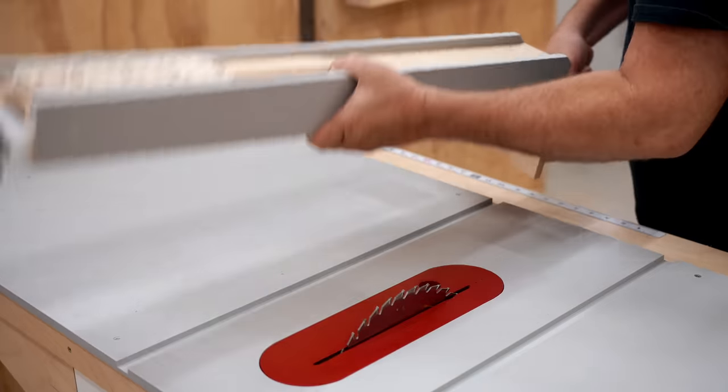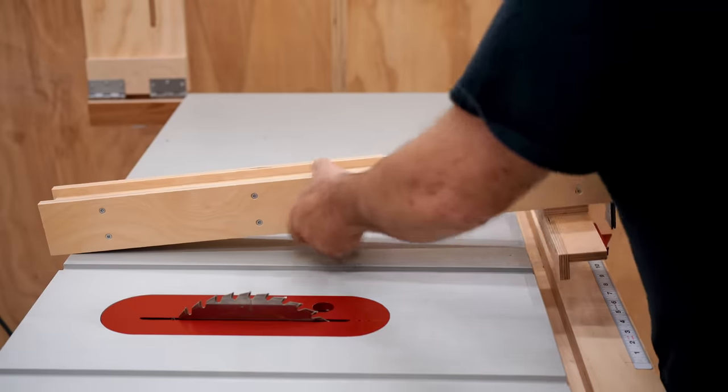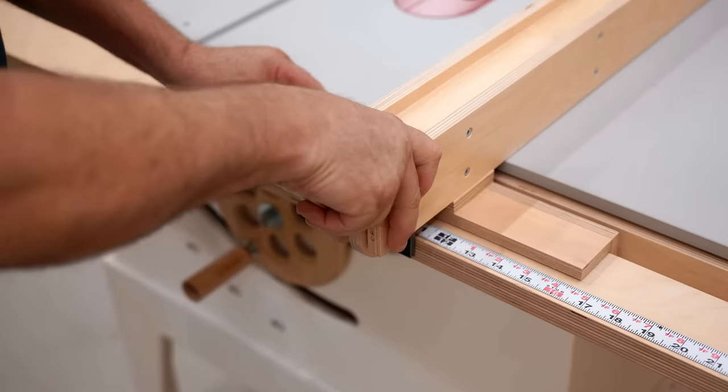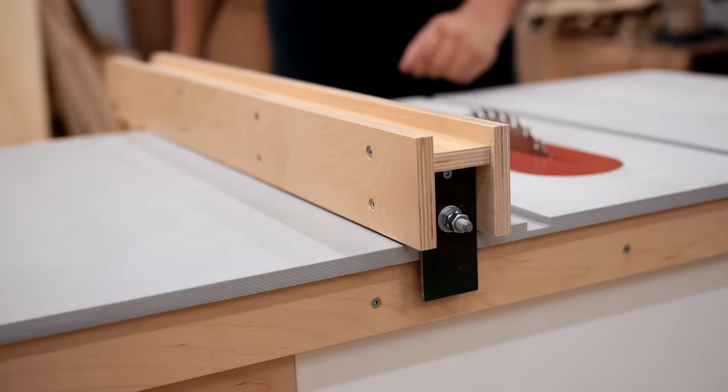In this video I'll be making a new version of my very popular table saw fence. There's nothing wrong with the old one, but the new one is smaller, a little bit easier to build, and it locks on the front and the back.